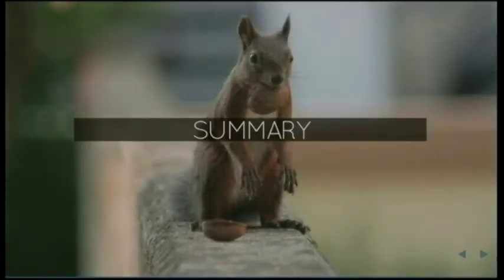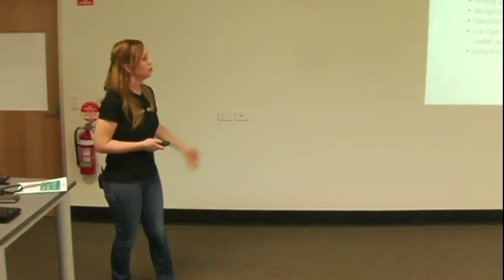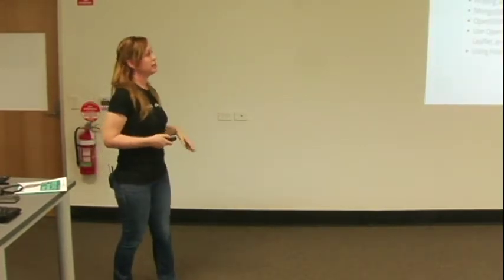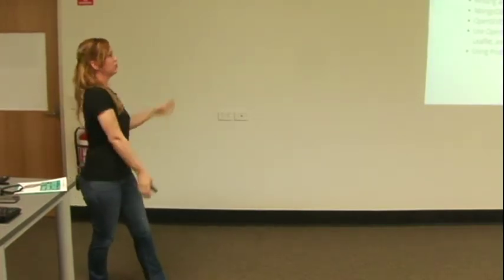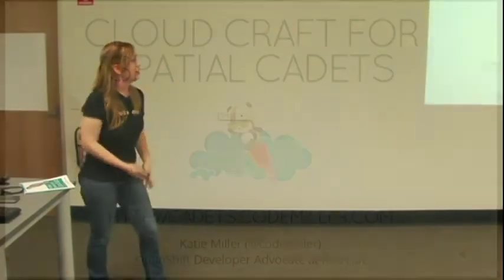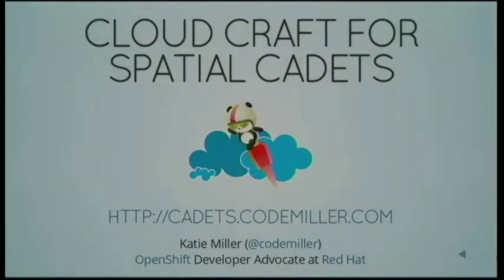To summarise: we've talked a little bit about spatial and how to make mapping apps and things to consider. We talked about cloud and platform as a service and why you might want to use it, and how it can help with auto scaling. For further reading, another great database for spatial is PostGIS, which also has great support on OpenShift. Mongo is great for just getting started. You'll find these slides at cadets.codemiller.com.